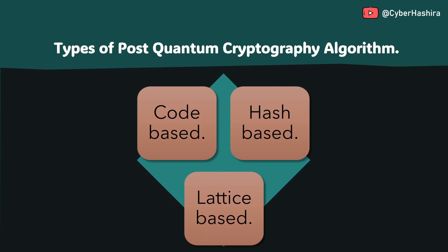Before we get into various PQC algorithms, I wanted to first explain the three main types of PQC algorithms currently being reviewed by NIST. These are code-based, lattice-based, and hash-based algorithms. There are additional types of PQC algorithms that I have chosen not to include in this slide, and I will explain why and discuss them later in this video.